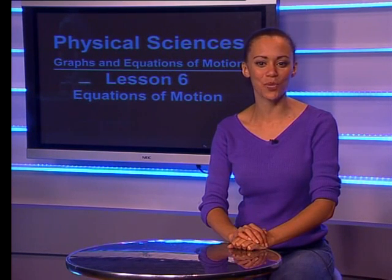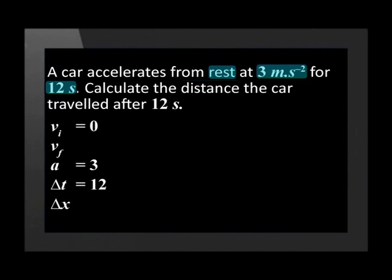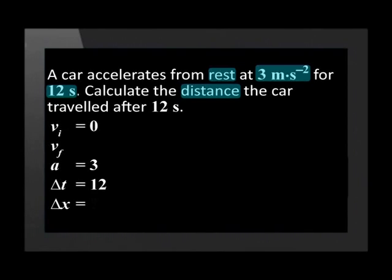Now we list all the variables: v_i, v_f, a, delta t, and delta x. Read the problem again and highlight the information given. A car accelerates from rest, meaning initial velocity is zero. The acceleration is 3 meters per second squared. The car travelled for 12 seconds. We go back to the question to see what they want us to work out — the distance — so we place a question mark next to delta x.